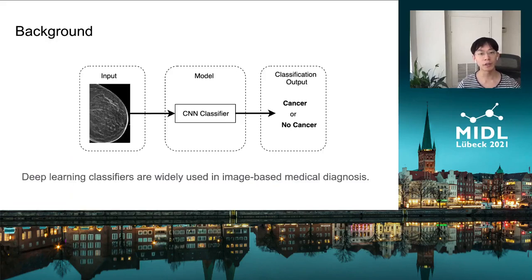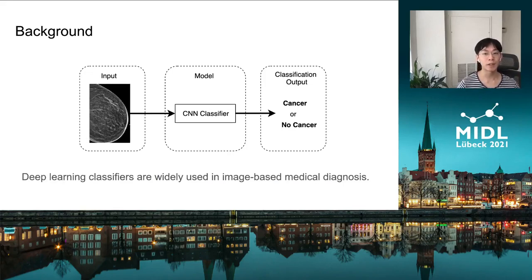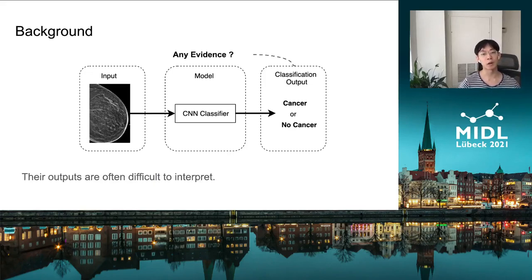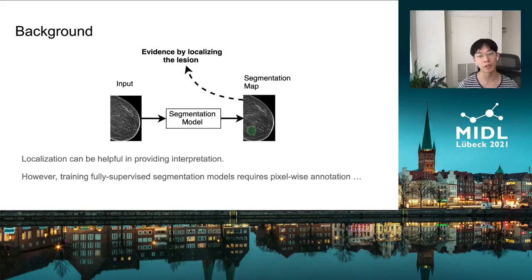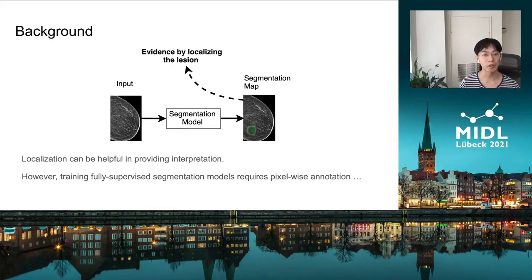In recent years, deep learning classifiers are widely used in image-based medical diagnosis. They achieve very impressive results, yet their outputs are often difficult to interpret. This is a huge limitation for application in the medical domain, where medical experts would expect the model to have some ability for interpretation so that the prediction can be trusted. In some application scenarios, such as breast cancer diagnosis utilizing mammography images, localization can be helpful in providing interpretations.